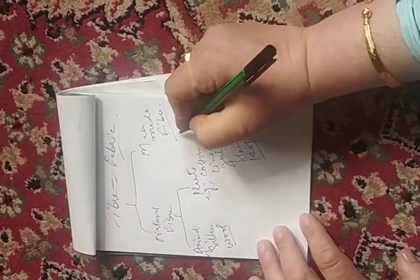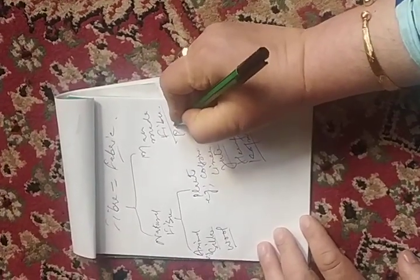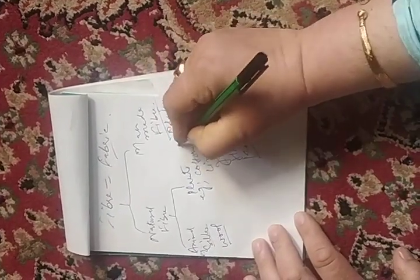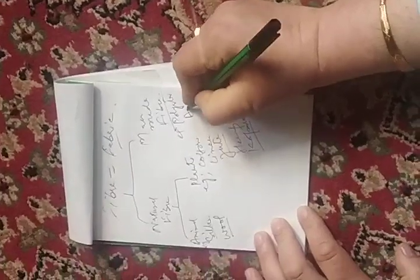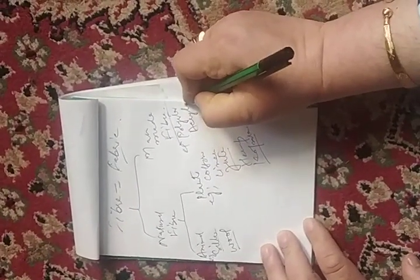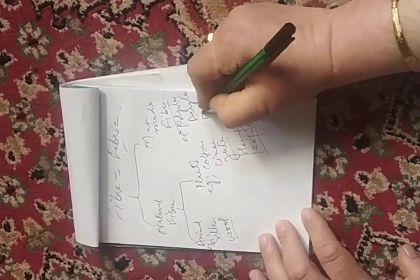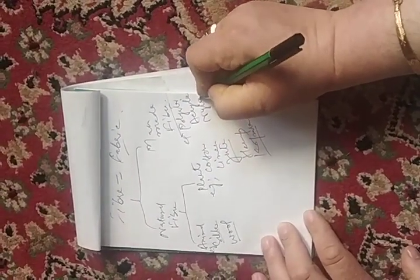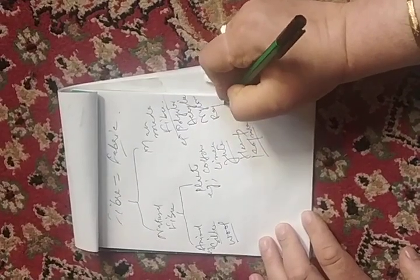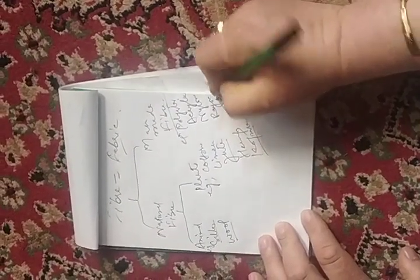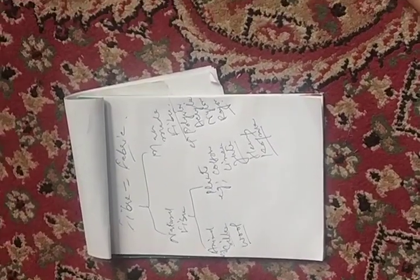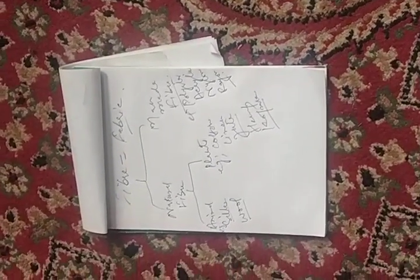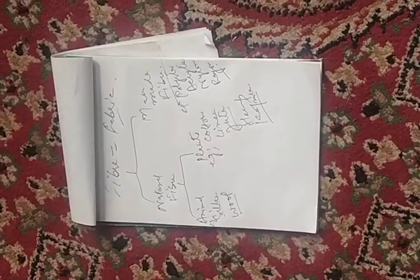Man-made fiber includes polyester, acrylic, nylon, and rayon. So there are two types of fiber: natural and man-made.